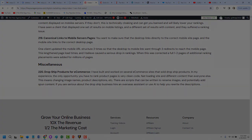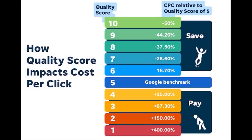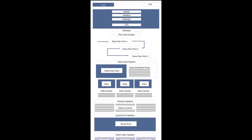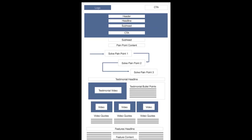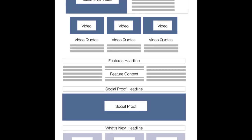Advertising platforms use a similar SEO algorithm to determine your quality score — an arbitrary score given to each page based on how it relates to the keyword. This helps advertising platforms keep irrelevant information off certain searches, but it also allows them to artificially inflate the price of a click. The code structure for this type of page is similar to the SEO structure with a few major differences.